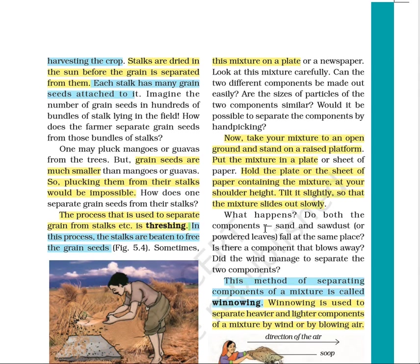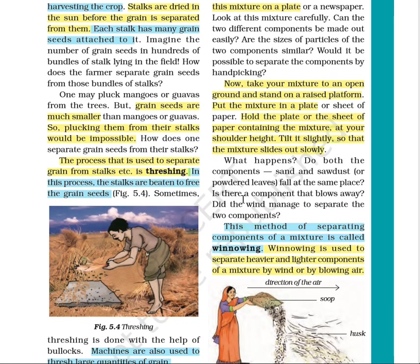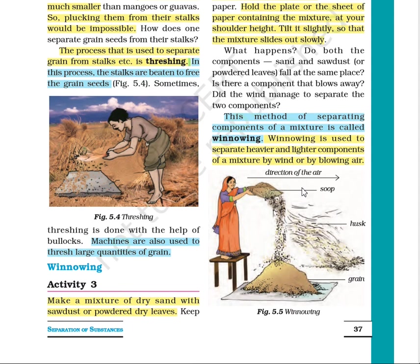Take the mixture to open ground and stand on a raised platform such as a stool. Put the mixture on a plate or sheet of paper and hold it at shoulder height. Tilt it slightly outward so the mixture starts sliding, then blow — the lighter impurity will be blown away. This method is called winnowing, which uses wind to separate components. The word 'winnowing' contains the word 'wind.'